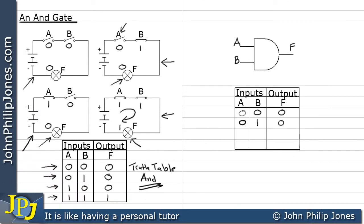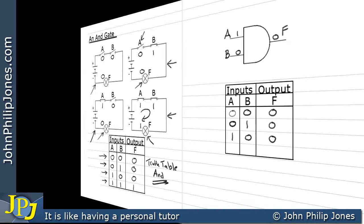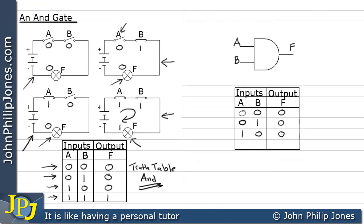The next possible combination is when A is a one and B is a zero. That results in input A being a one and B being a zero, and this will result in the output F being a zero. The final combination of the inputs is when A is a one and B is a one, resulting in both inputs being one. The output under these input conditions is a one. This now is the complete truth table for an AND gate, which defines the functionality of the AND gate precisely.